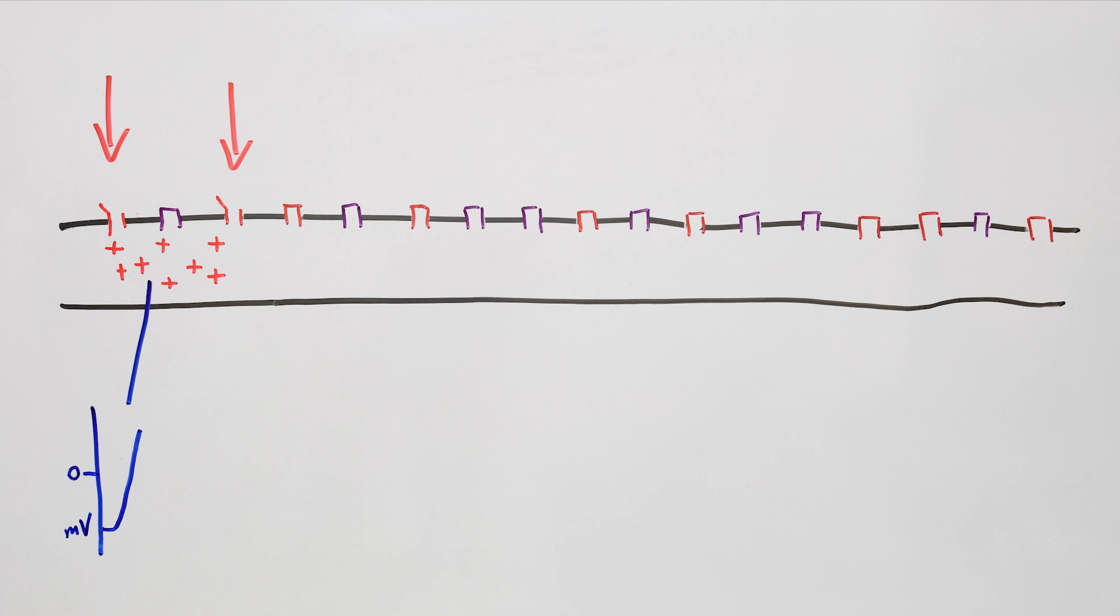When these ion channels open, voltage here increases. That increase in voltage creates some electric current, which pushes some positively charged ions there, and the voltage there increases a bit too. That triggers these channels to open.